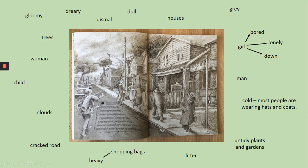We can see houses going all the way down the street. If you remember when we looked at the book, one building here where William lives is actually an orphanage - that means William lives there with lots of other children because for whatever reason he doesn't have his parents anymore. So as well as houses, we've got the orphanage, and you might want to write something about that.